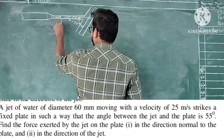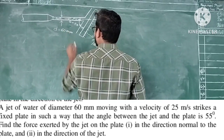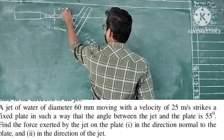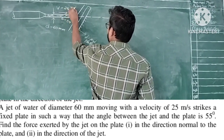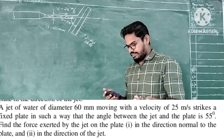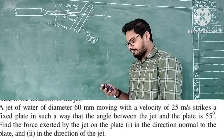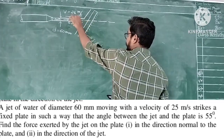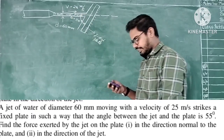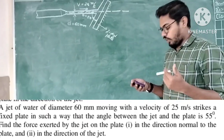The diameter of the jet D is equal to 60 mm, and the jet is moving with a velocity V equal to 25 meters per second. We need to find the force exerted by the jet on the plate in the direction normal to the plate.